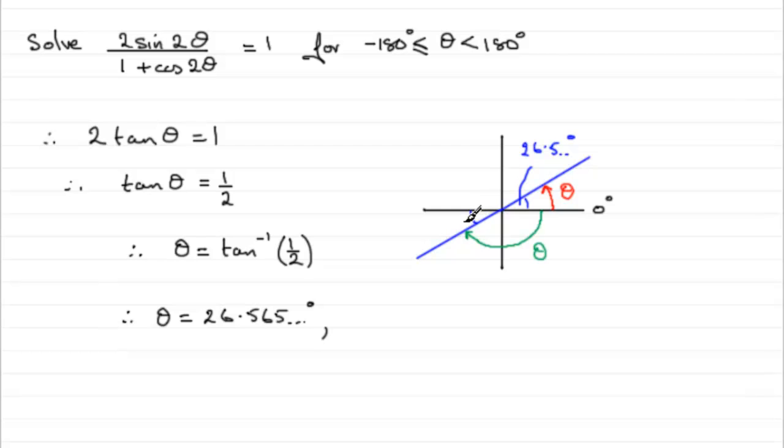So to get the green angle I've just got to do 180 minus the twenty six point five. If you do a hundred and eighty minus twenty six point five you're going to find that you get one hundred and fifty three point four three four and so on. But what you've got to remember is that we're turning in the negative sense, so this will be a negative angle.